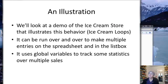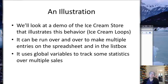What we're going to do is look at an illustration of this. This is a version of the ice cream store that uses the event loop. It can be run over and over. What it does is it not only creates a receipt, but it writes on a spreadsheet as well, and it uses some global variables to track statistics over multiple sales.